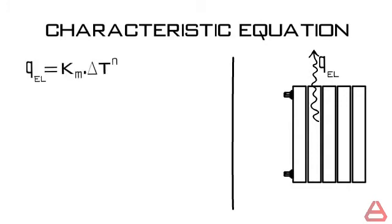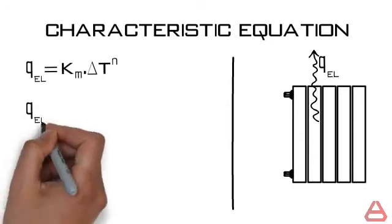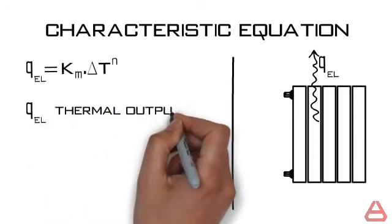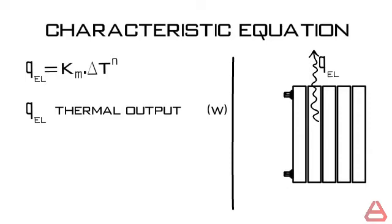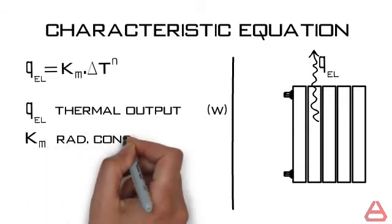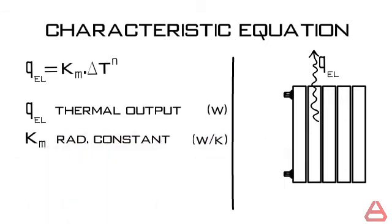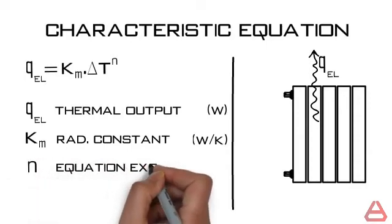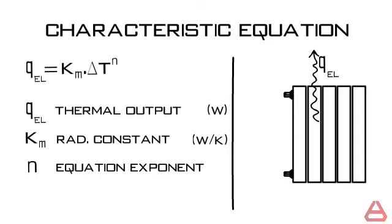Q element is equal to Km multiplied by delta T to the power n. Q element is the thermal heat output generated by the radiator element in watts. Km is the characteristic constant of the radiator in watts per Kelvin. And n is the characteristic exponent of the equation due to the ratio of convection to radiation thermal output.